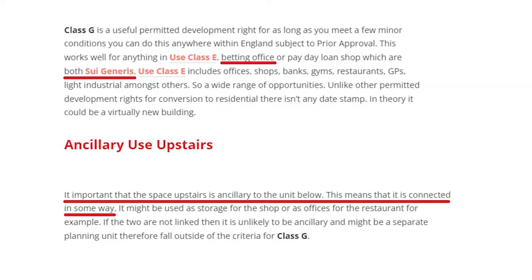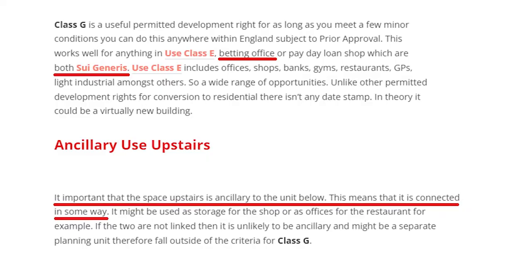Ancillary access is important if you're doing Class G for your permitted development right when converting commercial to residential. Class G allows you to convert above a shop up to two flats, and you can do this in any area at all - in a conservation area, a national park, and with listed buildings. But the upper floors have to be ancillary to the ground floor commercial shop. Make sure you take pictures of the ancillary access to prove that was the case before you start any work.